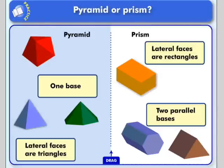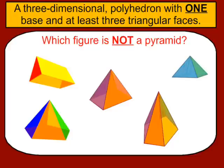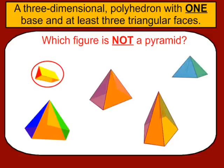Now the differences between a pyramid and a prism: a pyramid only has one base, whereas a prism has two bases that are congruent and parallel to one another. The lateral faces of a pyramid are made up of triangles, whereas the lateral faces on prisms are rectangles. Which one of these figures would not be a pyramid? This one is a prism because it has two congruent parallel bases. All the other pyramids have just one base and triangular lateral faces.